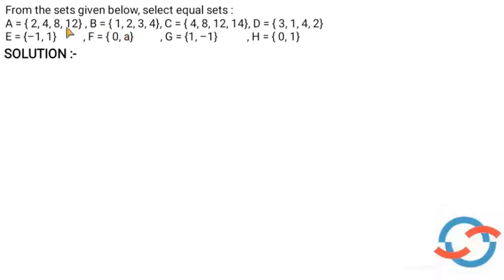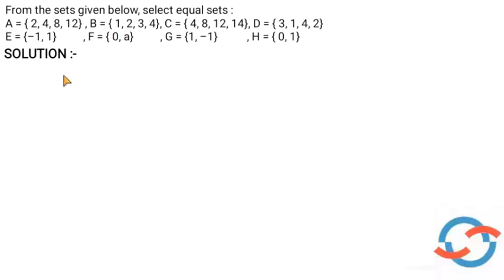Let's compare the sets. B's first element is 1. Comparing with C: C has 1 as first element, so B is not equal to C. Comparing with D: D has elements 1, 2, 3, 4 — all the same elements. So B and D are equal, we have all the same elements, so B is equal to D.